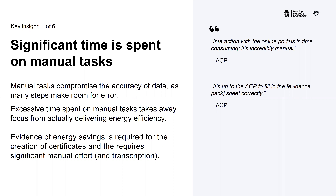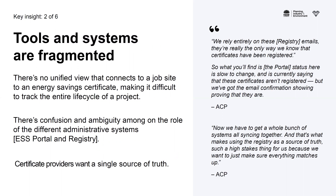On manual tasks: we've got problems with accuracy of data. ACPs say their interaction with current digital systems is incredibly manual, with a lot of evidence required and transcription between one set of information and another. It's not helped by the fragmentation of tools and systems — there's no unified view connecting jobs on site to the energy saving certificates being made. It's hard to track the life cycle of a project. Systems have been built alongside each other and don't all work together as well as we'd hope.